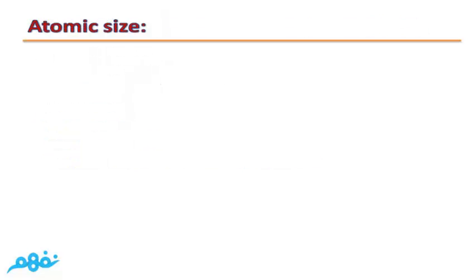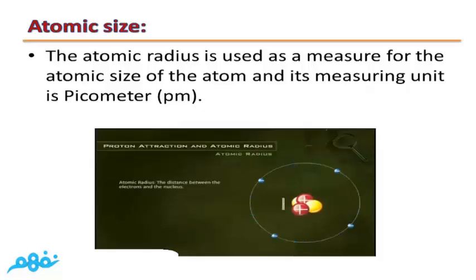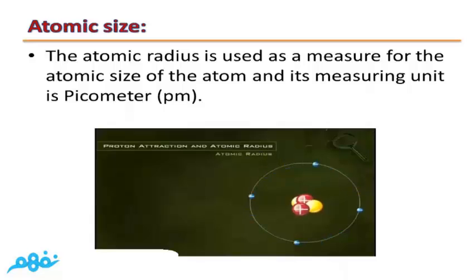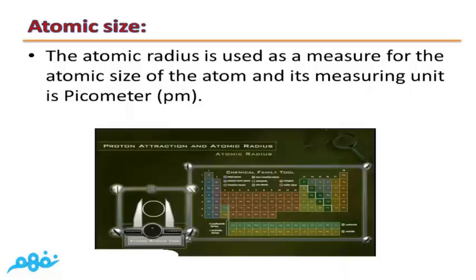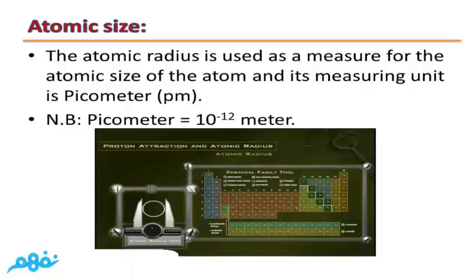Atomic size. The atomic radius is used as a measure for the atomic size of the atom, and its measuring unit is picometer, or pm. Note: one picometer is equal to 10 to the power negative 12 meters.